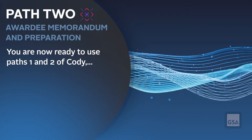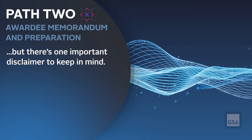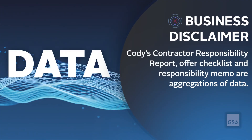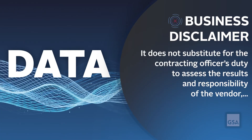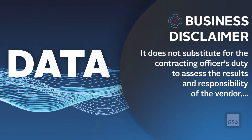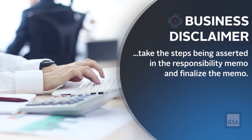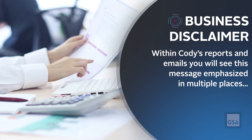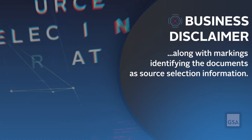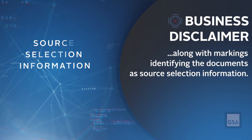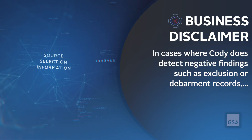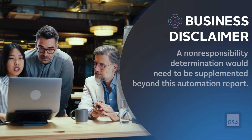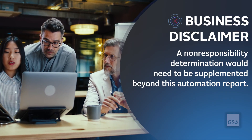You are now ready to use Paths 1 and 2 of Kodi, but there's one important disclaimer to keep in mind. Kodi's Contractor Responsibility Report, Offer Checklist, and Responsibility Memo are aggregations of data. They do not substitute for the contracting officer's duty to assess the results and responsibility of the vendor, take the steps being asserted in the responsibility memo, and finalize the memo. Within Kodi's reports and emails, you will see this message emphasized in multiple places, along with markings identifying the documents as source selection information. In cases where Kodi does detect negative findings, such as exclusion or debarment records, the CO should independently verify. A non-responsibility determination would need to be supplemented beyond this automation report.